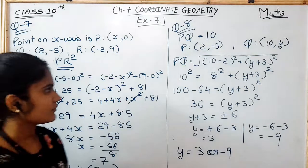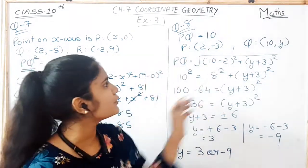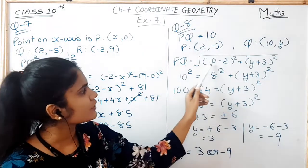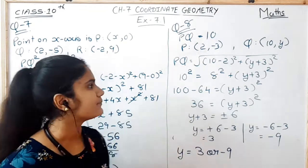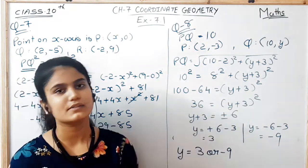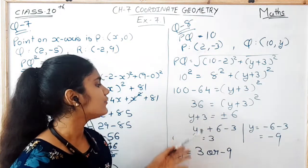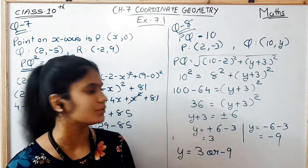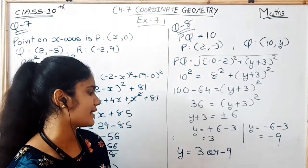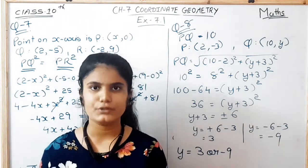In question number 8, we have to find the value of Y, where the distance between P(2, −3) and Q(10, Y) is given as 10 units. So: 10² = (10−2)² + (Y+3)², which gives 100 − 64 = (Y+3)², so 36 = (Y+3)². Taking square root: Y + 3 = ±6. Therefore Y = 6 − 3 = 3 or Y = −6 − 3 = −9. The two possible values of Y are 3 or −9. Please pause the video to note the solution.